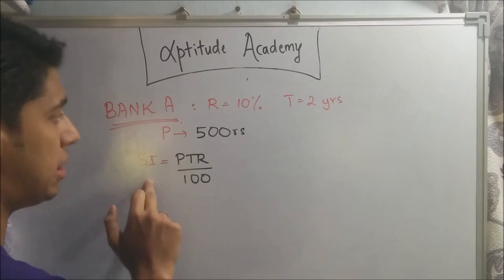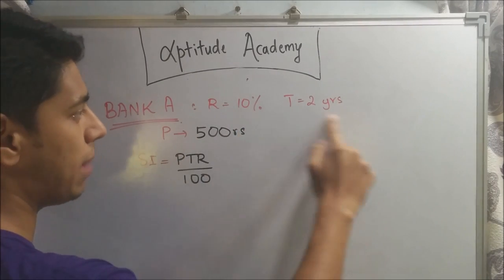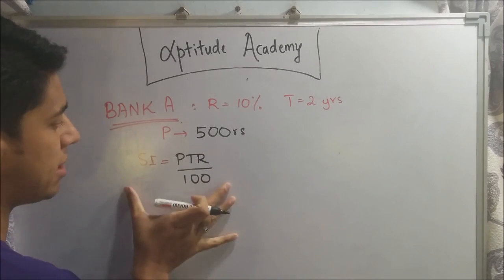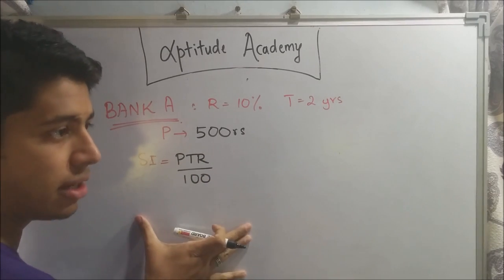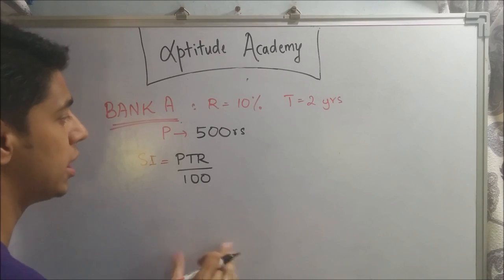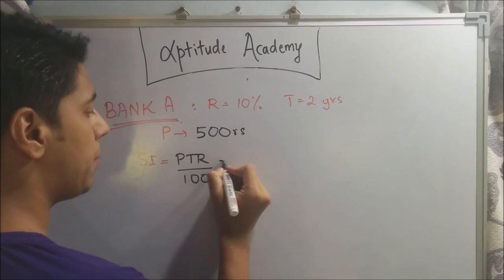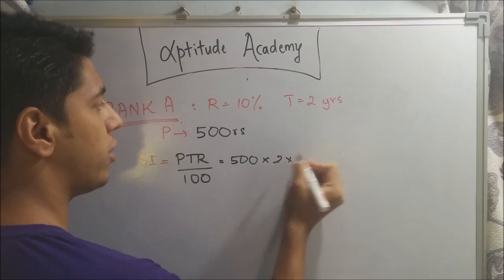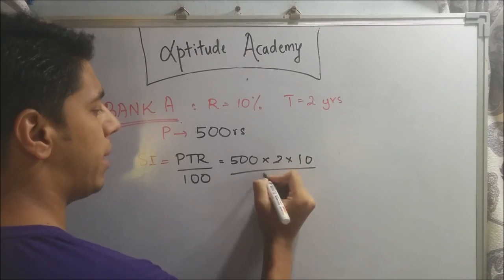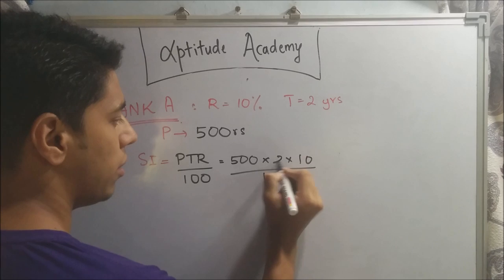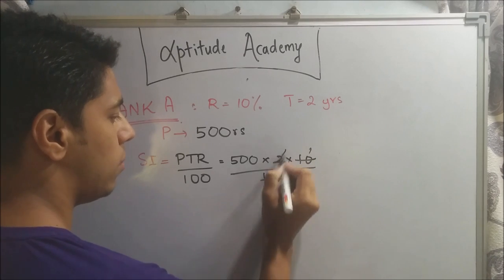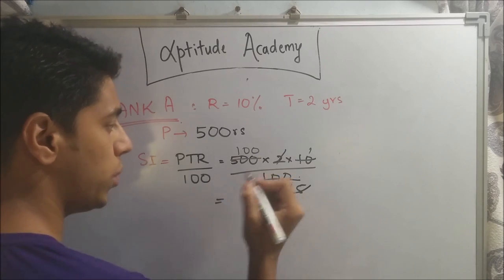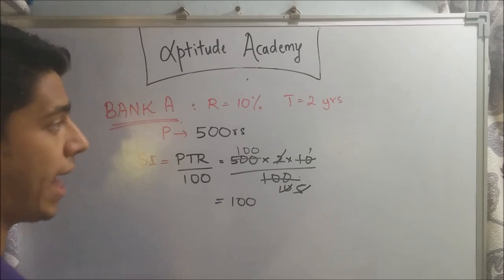For Bank A, which operates on simple interest, the rate is 10% and the time is two years. The principal amount is 500 rupees. Using the simple interest formula: 500 × 2 × 10 ÷ 100, your simple interest for two years is 100 rupees.